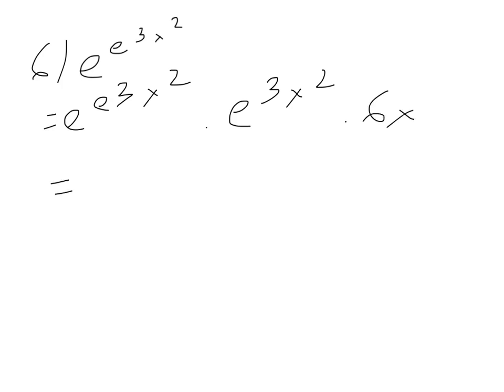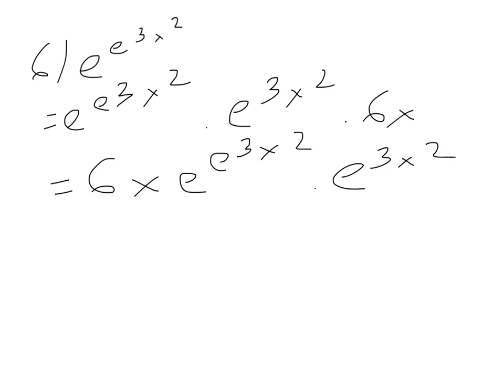By simplifying, it will be 6x times e to the 3x squared times e to the 3x squared. Thank you.